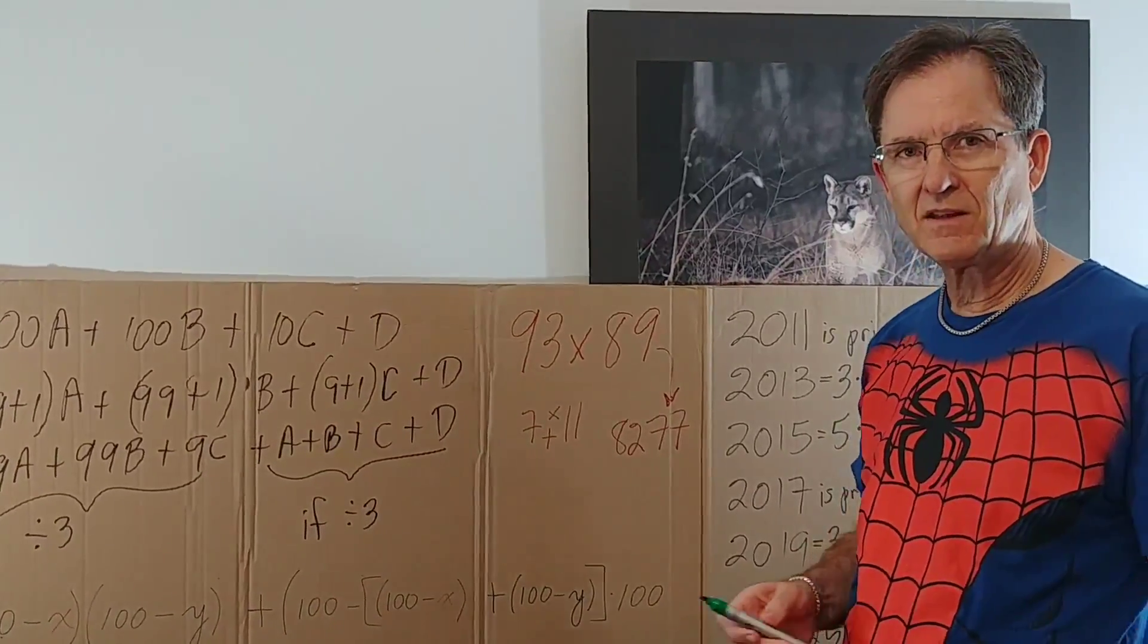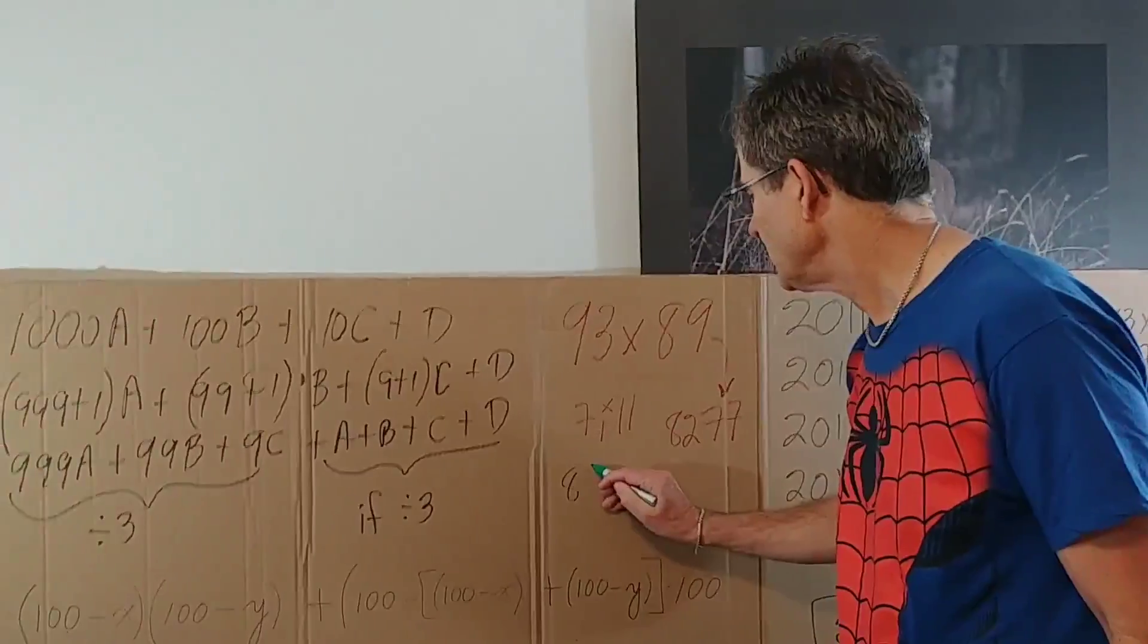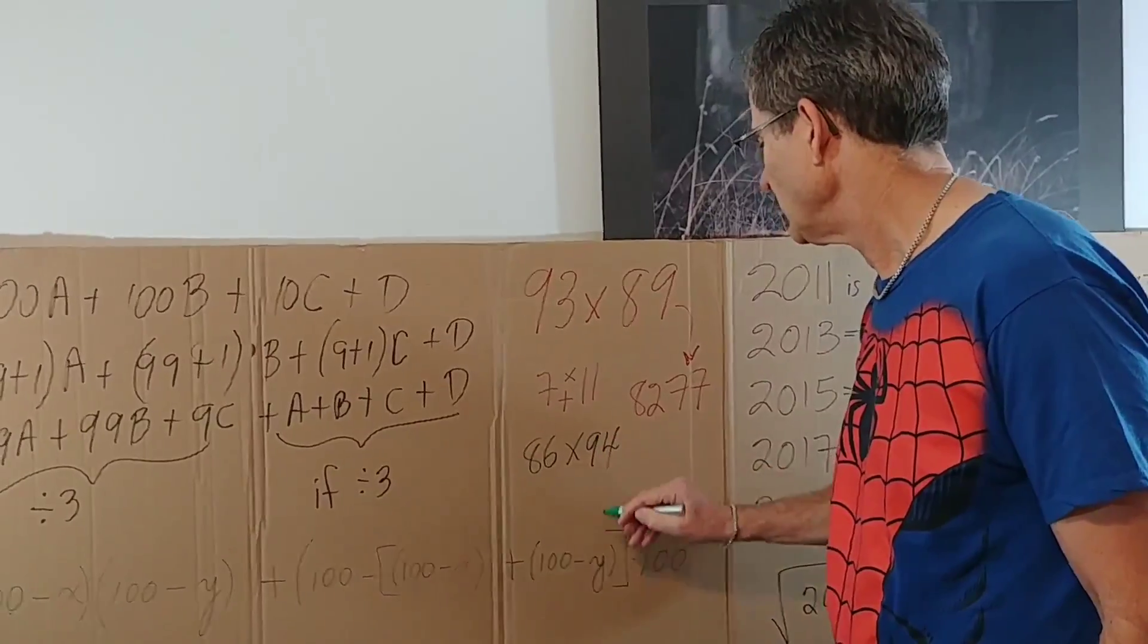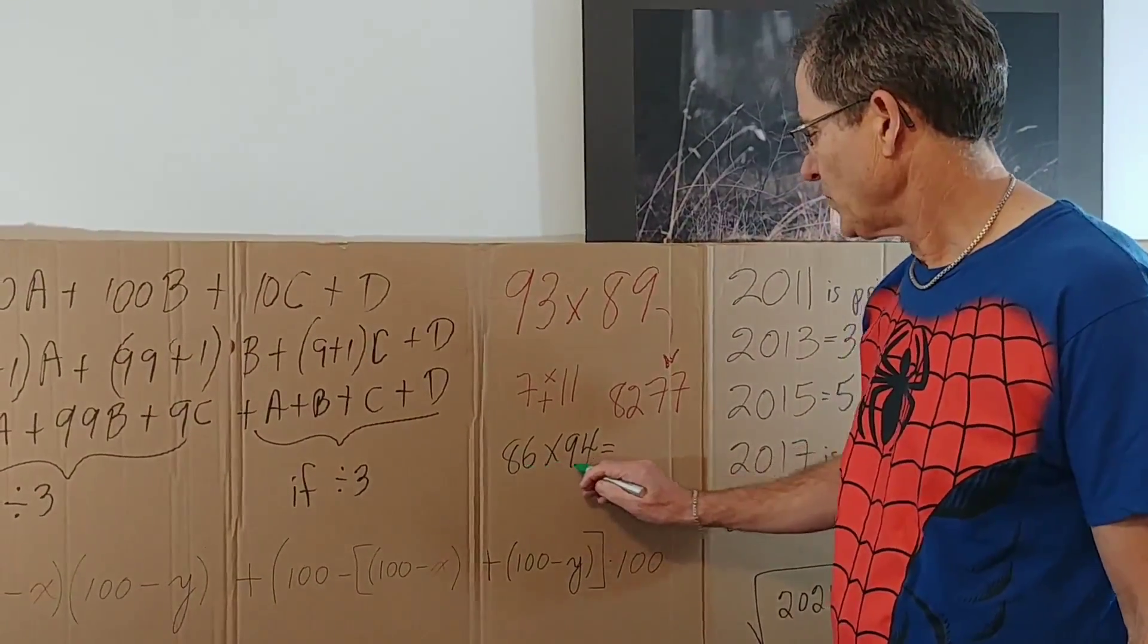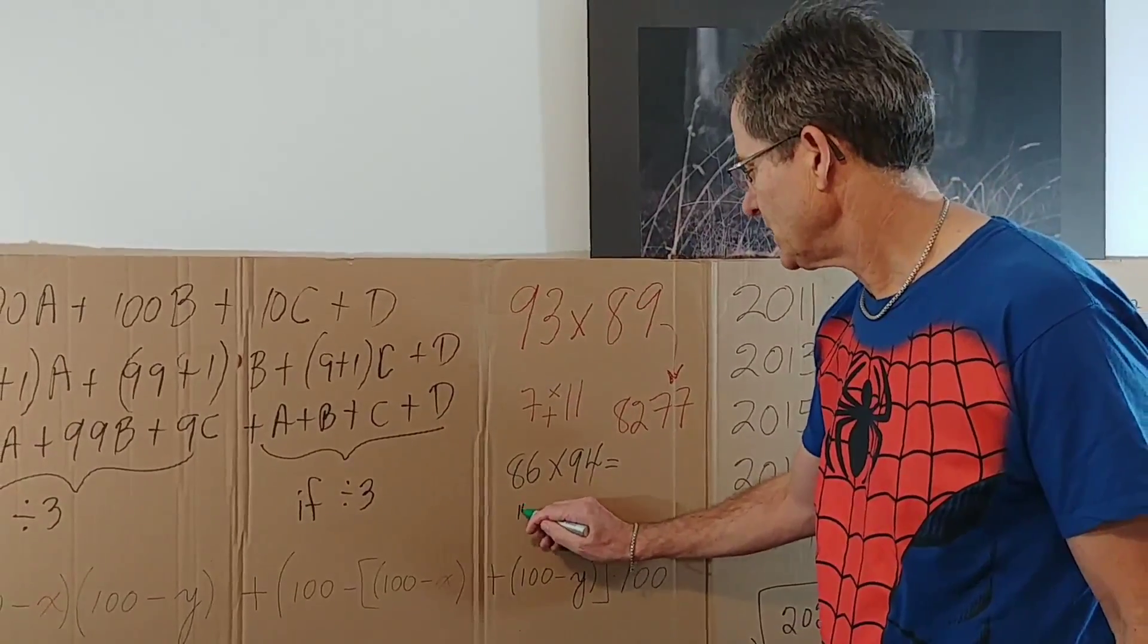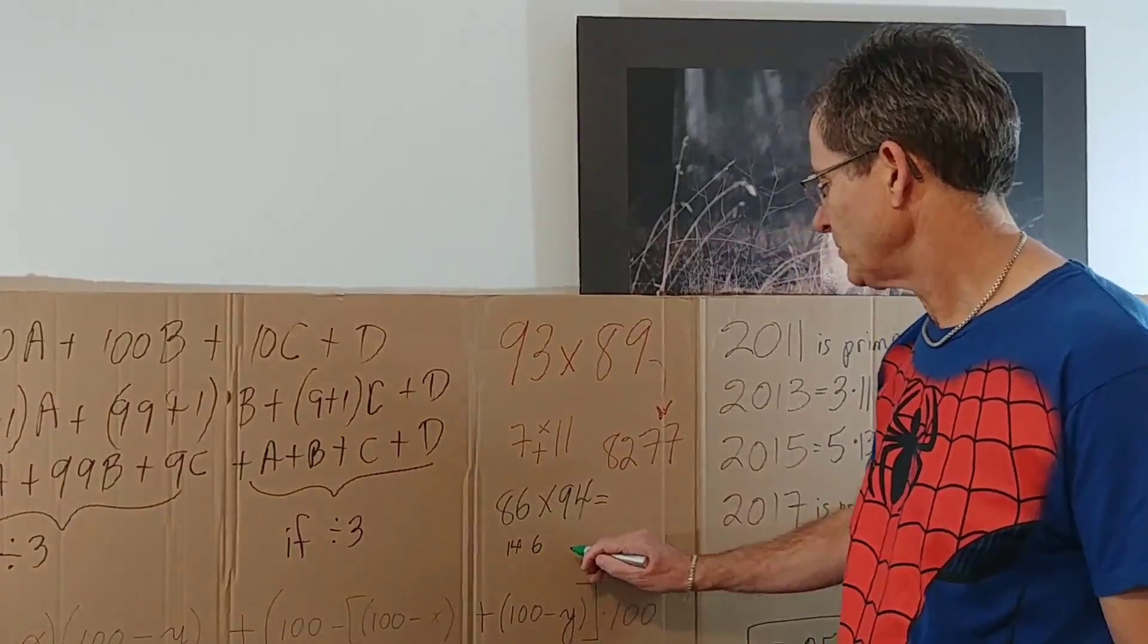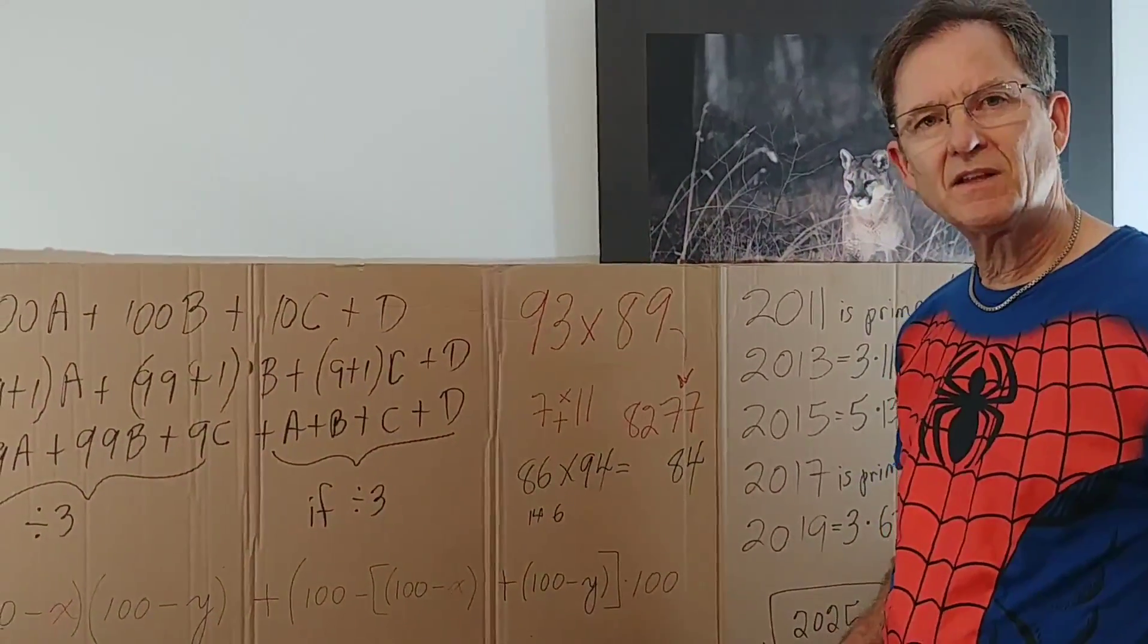Let me do one more in case you think this is an exception to the rule. Let's say we multiply 86 times 94. Once again, subtract both of these from 100, you get 14 and 6. So first you multiply them and you get 84, the last two digits in the number.